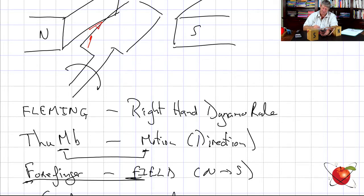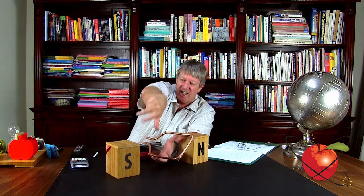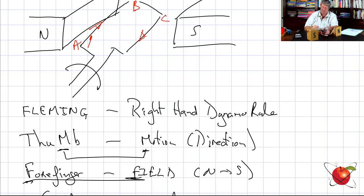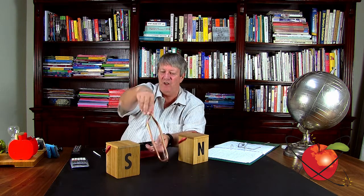If AB is moving up, current flows from A to B. For CD, which is going down, the motion is down, so the current comes from C to D. That's obvious but worth confirming for completeness. Just apply: field direction, motion direction, then read off the current direction from the second finger.